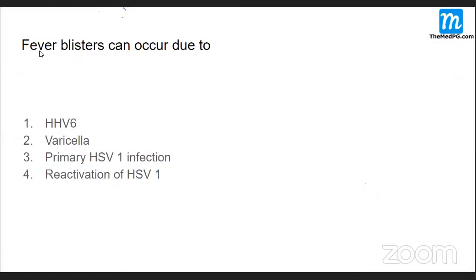Fever blisters — a patient who has had HSV-1 infection can have reactivation later. Whenever the patient develops fever, there could be associated blisters. These are painful ulcers along the labia — they are basically reactivation of HSV-1 whenever the patient gets high-grade fever.